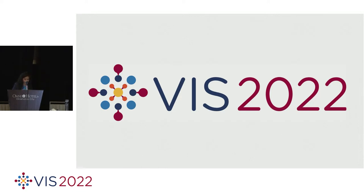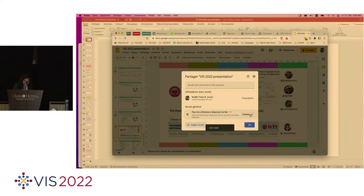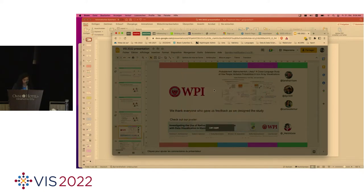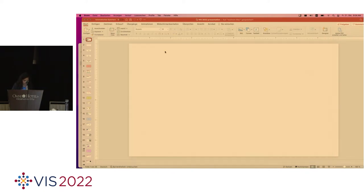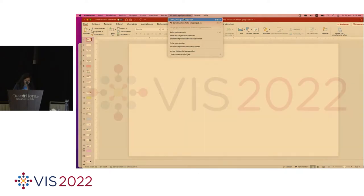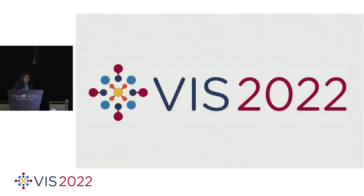We have three in-person and three virtual presentations. Our first presenter is Noelle R., a PhD student at WPI in Massachusetts. The title of her paper is 'Probablement Wahrscheinlich Likely: A Cross-Language Study of How People Verbalize Test Probabilities in Icon Array Visualizations.' Take it away, Noelle.